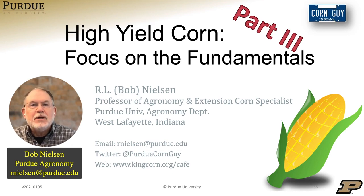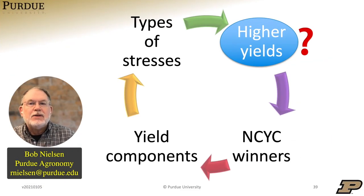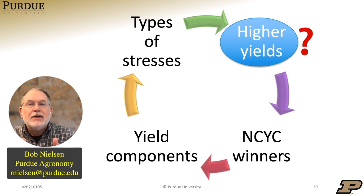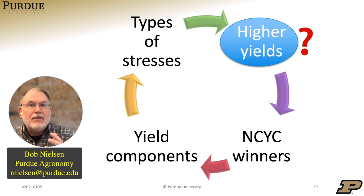This is part three of this little series on high-yield corn, focusing on the fundamentals. In the previous recordings, we talked about high yields in general. We looked back at history to see what's happened in the U.S. since 1866. And then I talked a little bit about the winners of the National Corn Yield Contest and what we could learn from them.